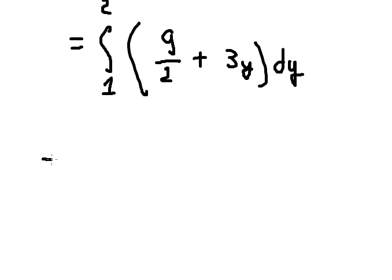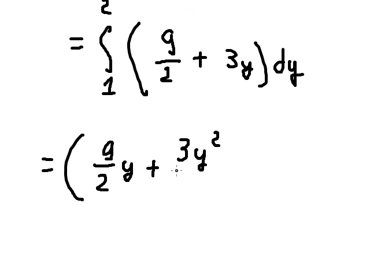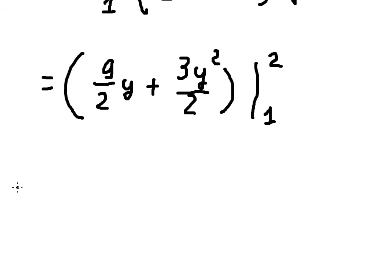...of 9 over 2 gives us 9 over 2 times y. The next term gives us 3y squared over 2. I will apply the bounds from 1 to 2, and now we have the final answer.